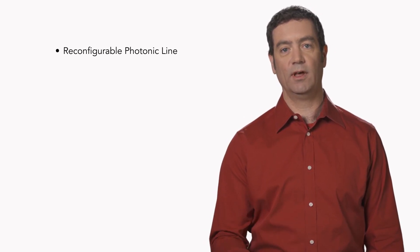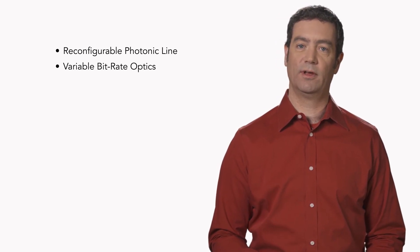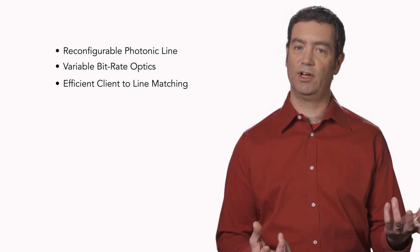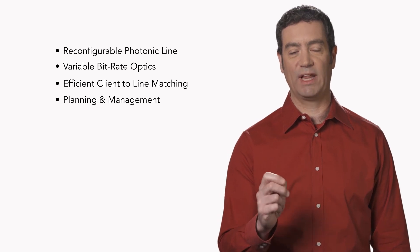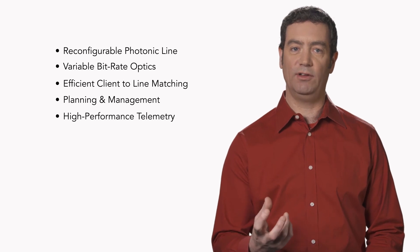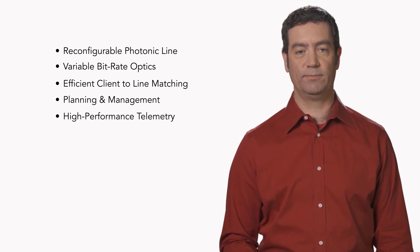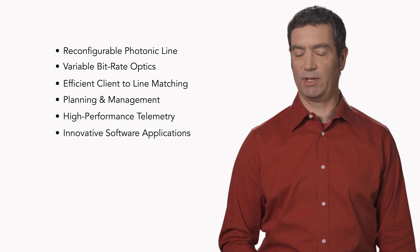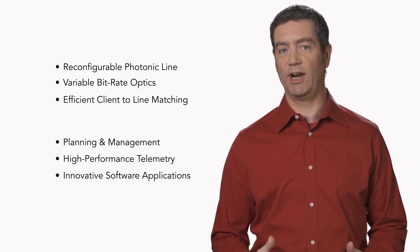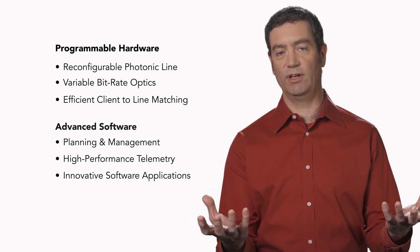Liquid Spectrum consists of several key elements: a flexible grid reconfigurable photonic line system, software configurable variable bit rate coherent optics, a platform architecture that allows for efficient matching of client services to flexible line capacity, integrated online planning and management functions with a modern normalized data model and APIs for high performance telemetry, and analytics and advanced software applications. Basically these elements can be grouped into two larger categories: the programmable hardware and advanced software.